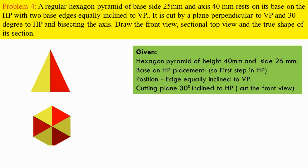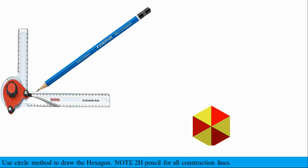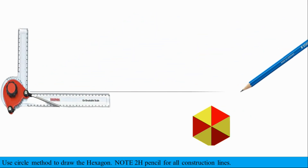If you look at the cutting plane — what is bisecting? What is the meaning of bisecting the axis? That means the middle cutting plane — the correct axis. We will see the height of the right side. The height to the VP: we take the height and mark it.